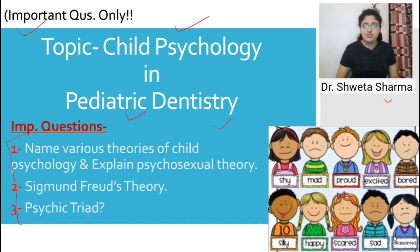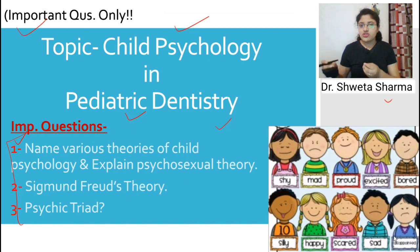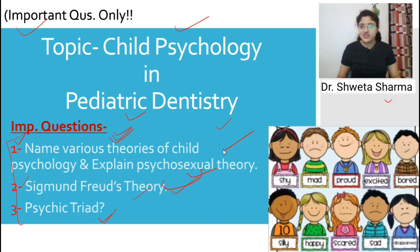These three are the most important questions from this chapter. First: name various theories of child psychology and explain psycho-sexual theory. Second: Sigmund Freud's theory — the psycho-sexual theory. This can come for 10 marks or 5 marks. Third question is psychic triad, which can also come for 5 marks.